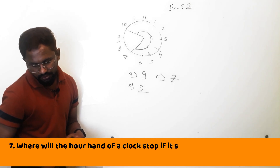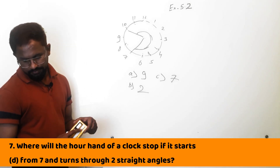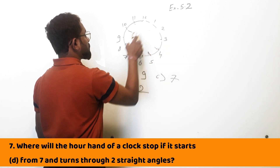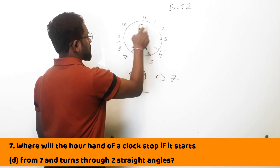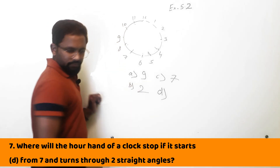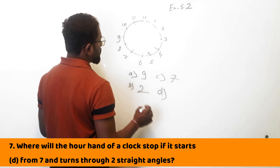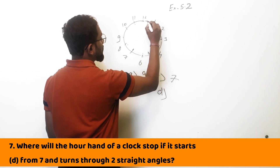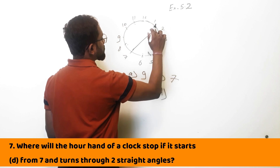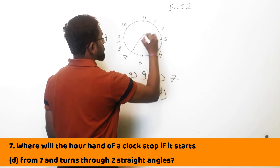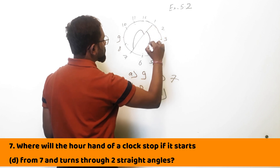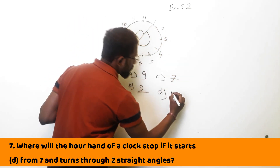D part: from 7 and turns through 2 straight angles. One straight angle brings it to 1, then another straight angle — making 3 right angles total — brings it back to 7. So the answer for D part is 7.